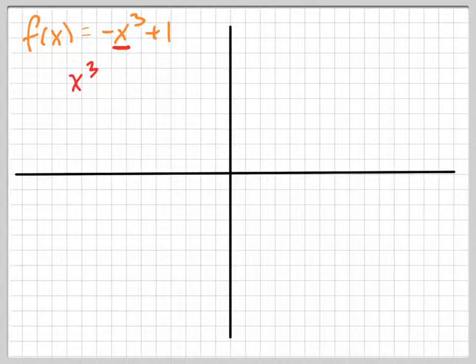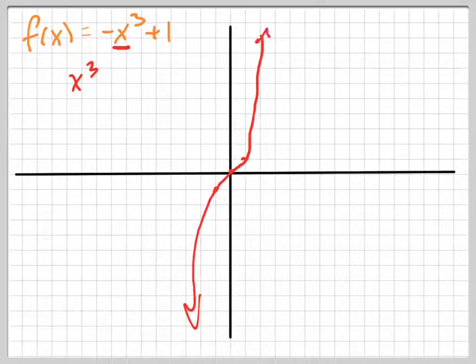x cubed looks like this. x cubed goes through 1, 1, and negative 1, 1, and 0, 0, and 2, 8, so it's up here somewhere. So this is what the basic graph looks like. I didn't do that very well right there. Let's try that again. That's your basic graph of x cubed.